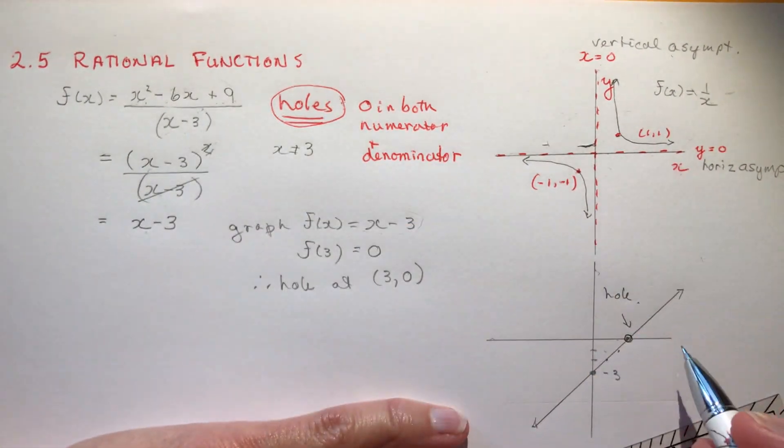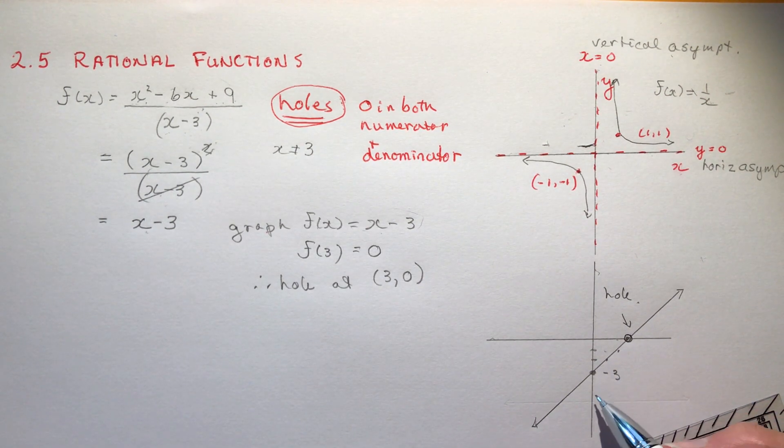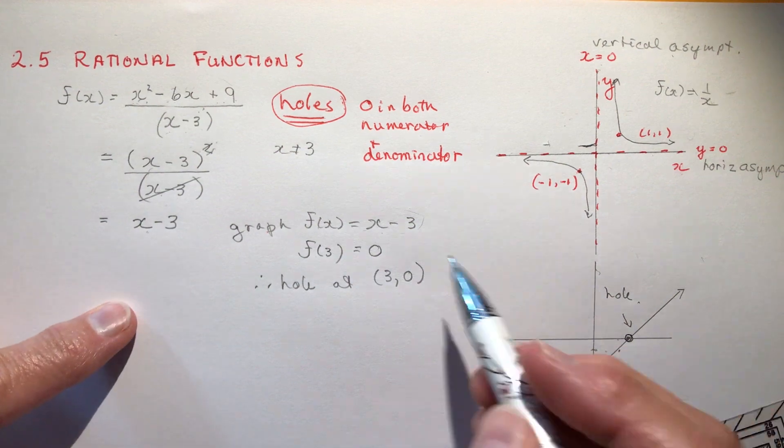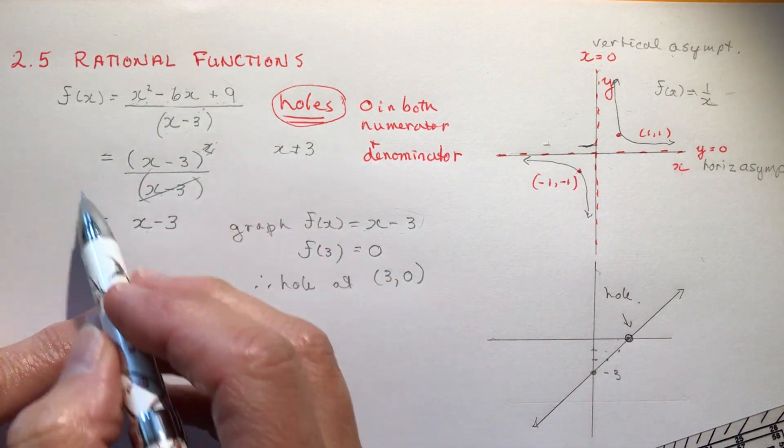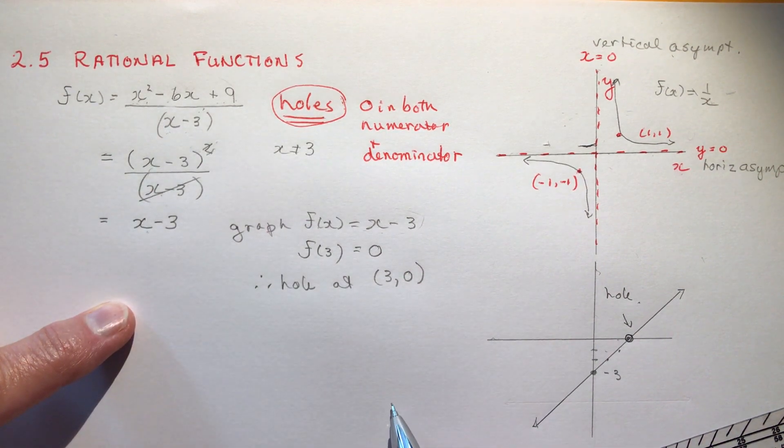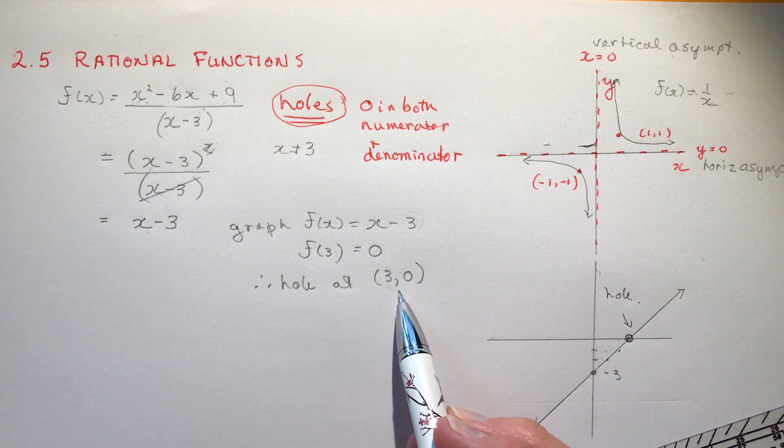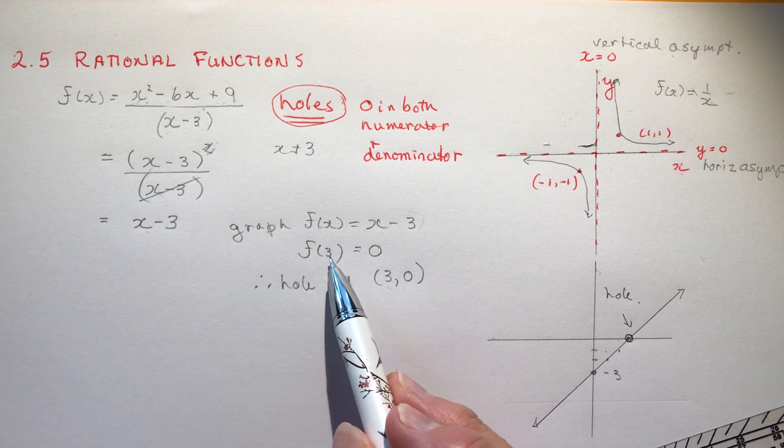When x is 3, y is 0 means there's a hole in the graph so I literally will draw a hole here, an open circle. This is my hole and this line represents this expression here now. So you have to identify the hole, you don't just graph x minus 3 and say oh yeah just simplify to a line.